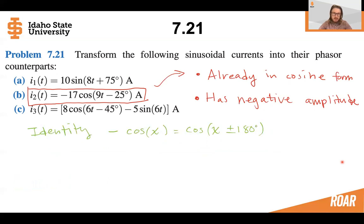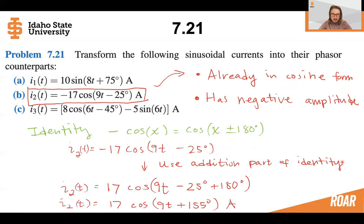So we know that there's the identity minus cosine of x is equal to cosine of x plus or minus 180 degrees. So we will use the addition part of the identity because it's convenient to represent this angle.